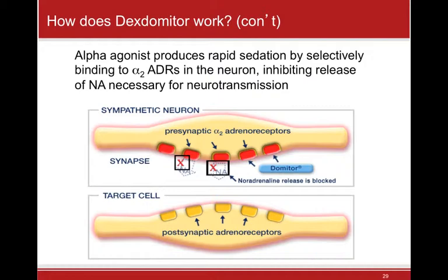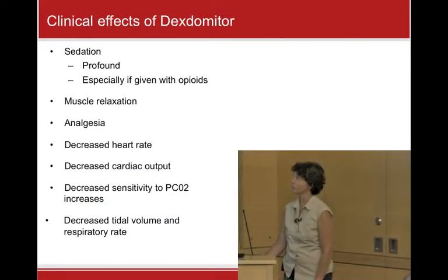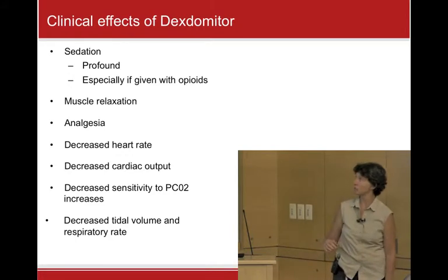The beauty of this drug — that it creates a pain-free state, a sedated animal, amnesia in our patients, and great muscle relaxation — is through the blocked release of norepinephrine. The reversal agent, atipamezole, simply gets onto those receptors and displaces the dexmedetomidine, and suddenly norepinephrine levels come back. Animals that receive the reversal agent antisedan get up, walk off, and it's almost like nothing happened.